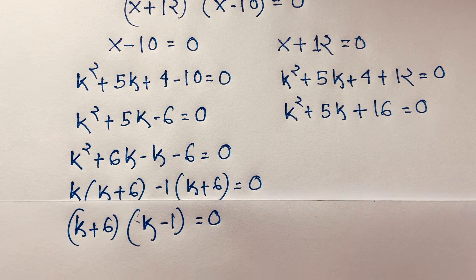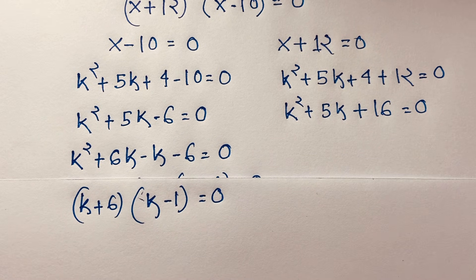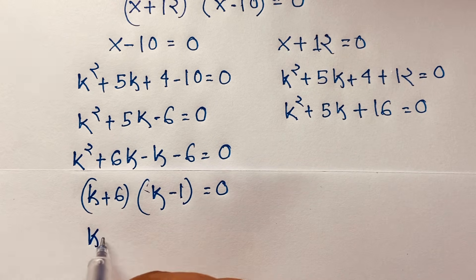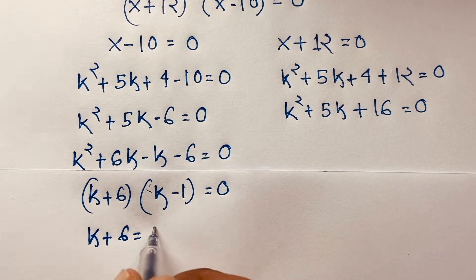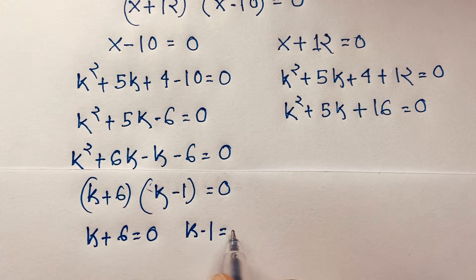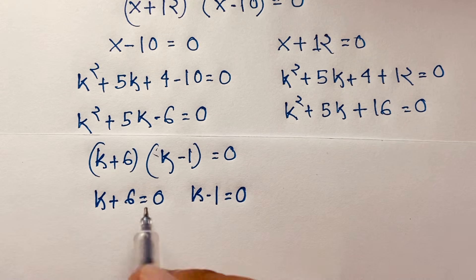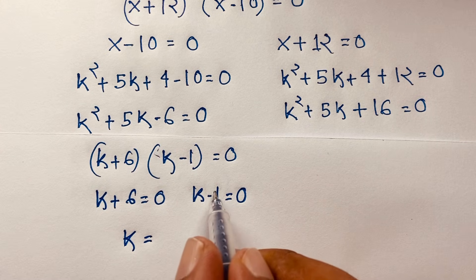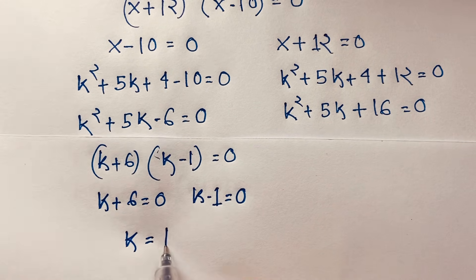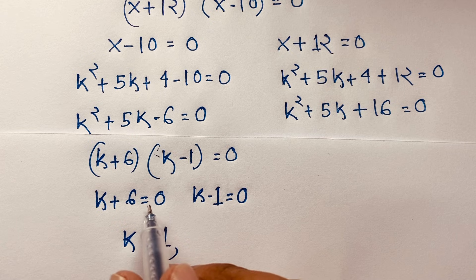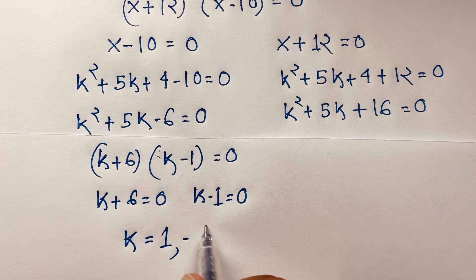We find two cases: k + 6 = 0 and k - 1 = 0. Moving terms across: k = 1 and k = -6. So these are our real-number solutions from this case.